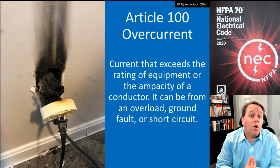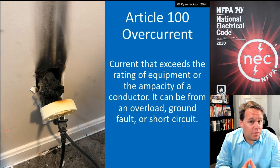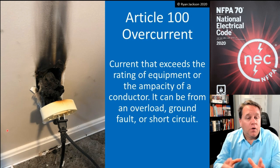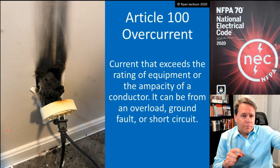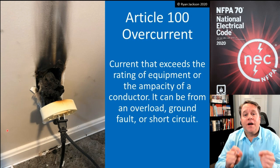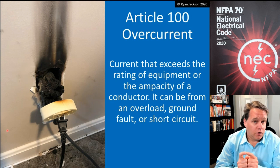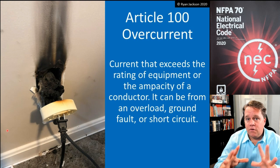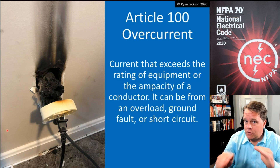Article 240 protects conductors from overcurrent — that's all Article 240 does. It does not protect equipment. If you want to protect equipment from overcurrent, you have to go to the equipment article. For example, if supplying a transformer, go to Article 240 to protect the conductors feeding and leaving the transformer, but for the transformer itself go to Article 450. The same applies to panelboards, receptacles, or anything else.